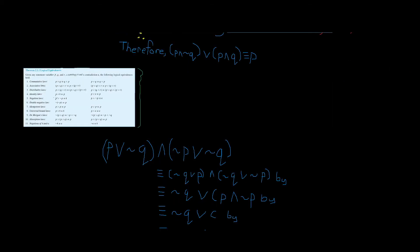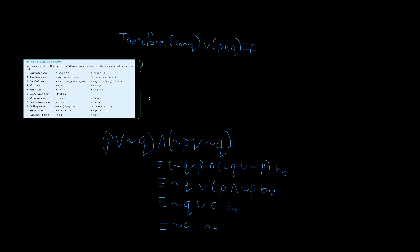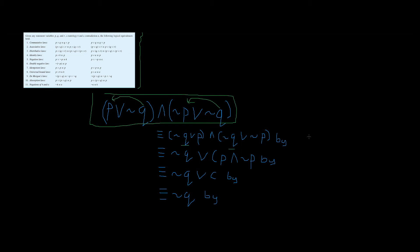We have our last problem for today. We're going to use the same logical equivalence laws. It says p OR negation q AND negation p OR negation q — this is what we begin with and we're going to simplify it. We rearrange to negation q OR p AND negation q OR negation p. We flipped these, and that's the commutative law — number one.